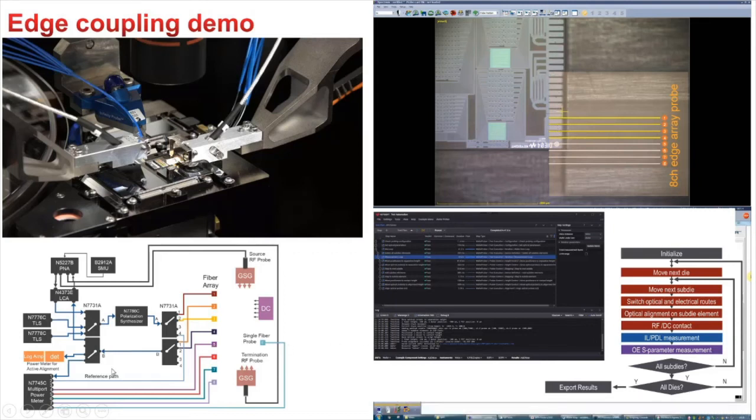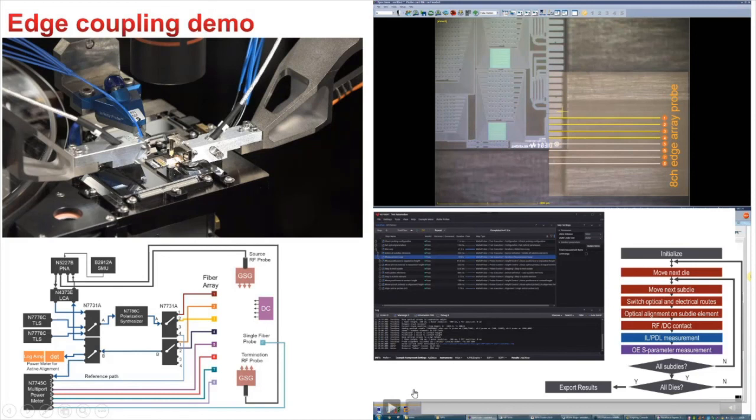This is done with this setup. Here we have photonic application suite elements. We have a multiport power meter, tunable laser, polarization synthesizer, optical switches that connect to the fiber array. And we could also use the RF probes, but these are all passive elements. We are running through this test script as we have shown here. And now let me start the videos.